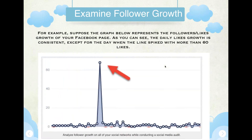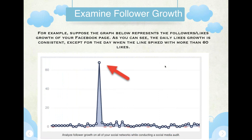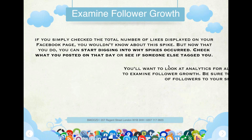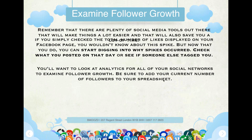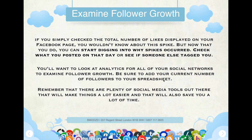For example, suppose the graph represents the followers or likes growth of your Facebook page. As you can see, the daily likes growth is consistent, except for the day when the line spiked to more than 60. If you simply checked the total number of likes displayed on your Facebook page, you wouldn't know about this. But now that you do, you can start digging into why the spike occurred — check what was posted on that day and see if anyone tagged you. Be sure to add your current number of followers to your spreadsheet, and remember there are plenty of social media tools out there that will make things a lot easier and save you time.